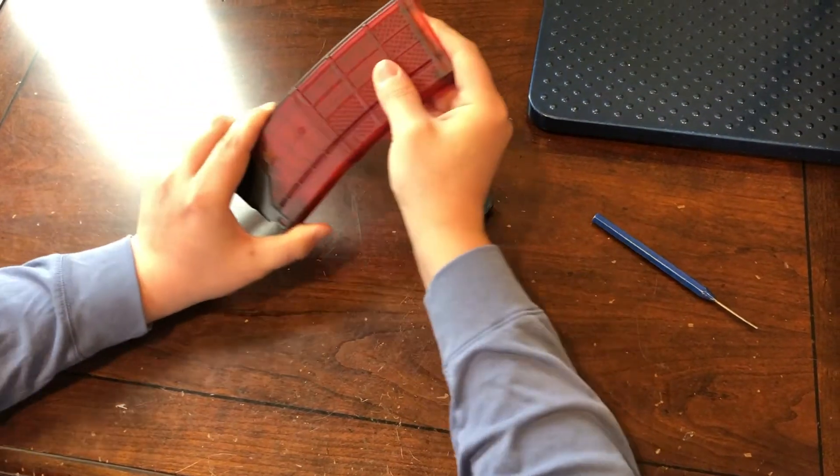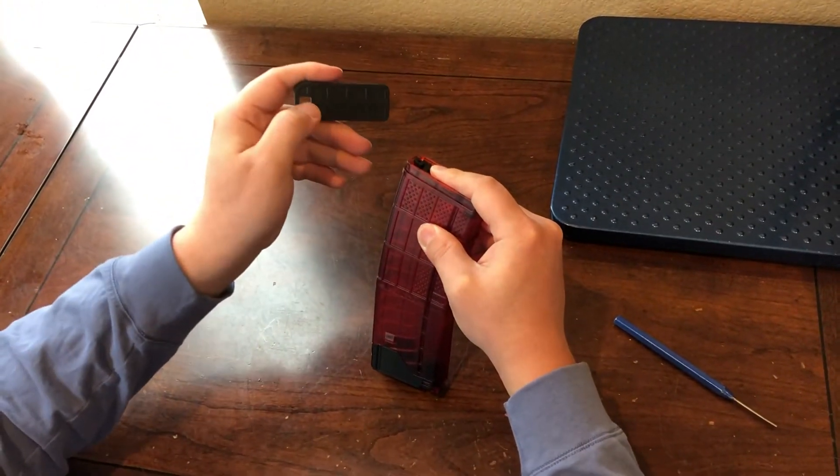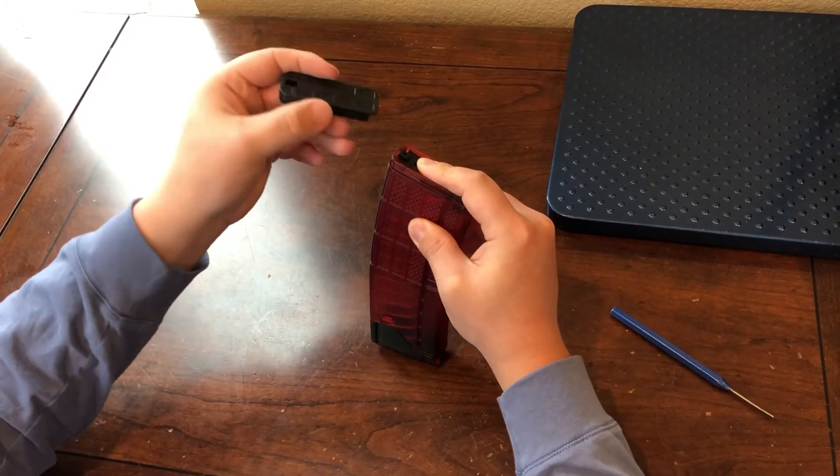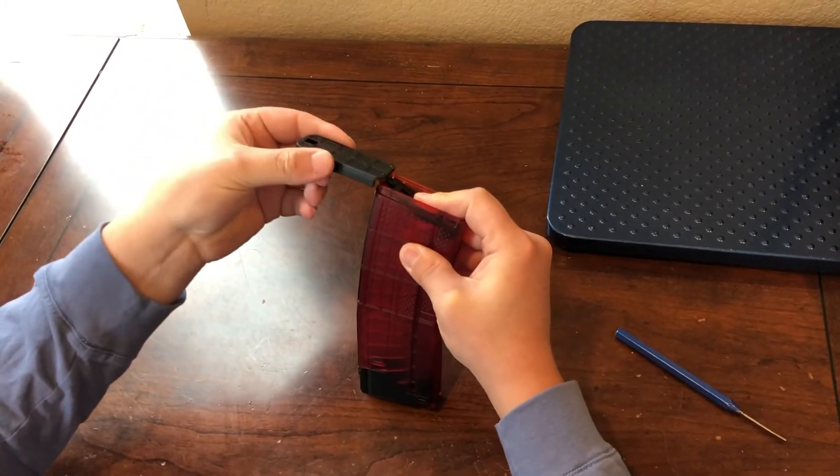Depress the spring and then with the floor plate you'll notice that there is a little tab or a little cutout right here. So that's going to be towards the rear of the magazine or the opening is going to slide on from the rear.